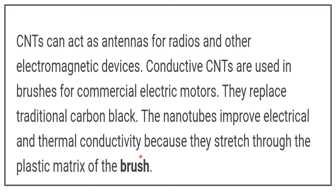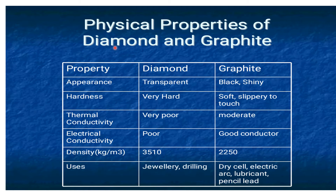Carbon nanotubes can replace traditional carbon black and improve electrical and thermal conductivity because they stretch through the plastic matrix of the brush. When heat is applied or electrical energy is supplied, they stretch through this plastic matrix through the cyclic tube structure, improving both electrical and thermal conductivity. Now, comparing the properties of diamond and graphite: diamond is a transparent material whereas graphite is a black shiny material.